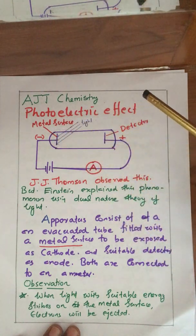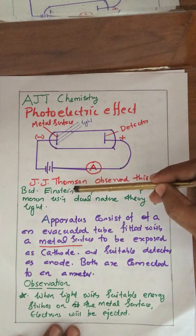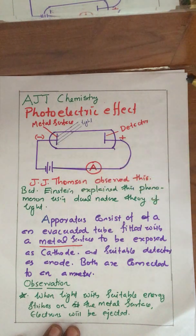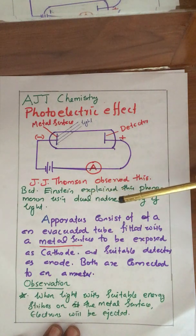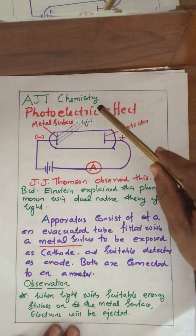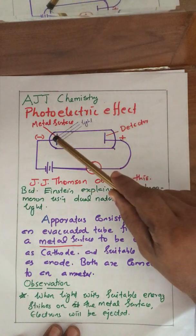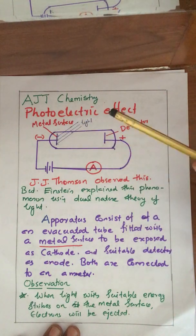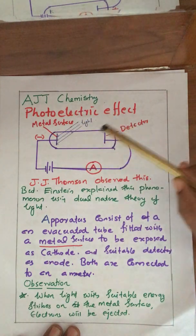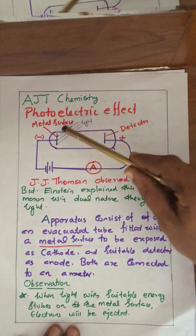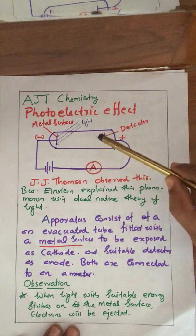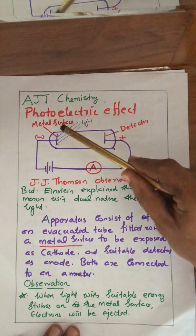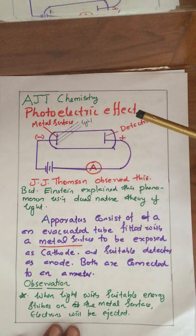A famous scientist, Einstein, using quantum theory and his own dual nature theory, explained the photoelectric effect. He got the Nobel Prize for this explanation of the photoelectric effect.